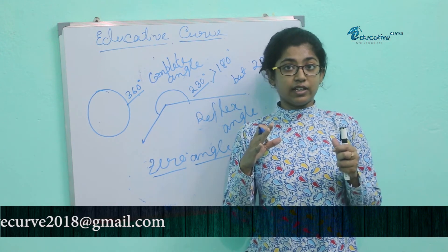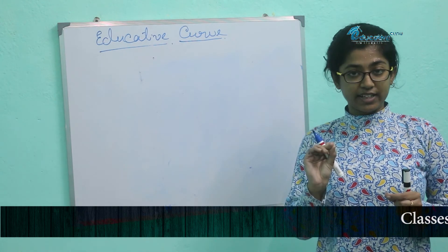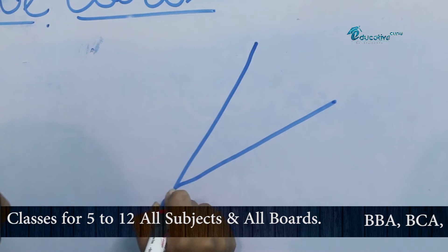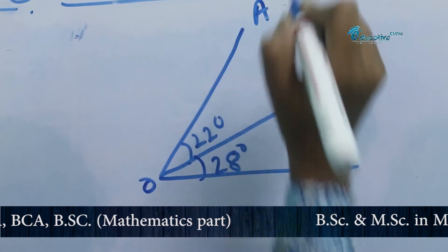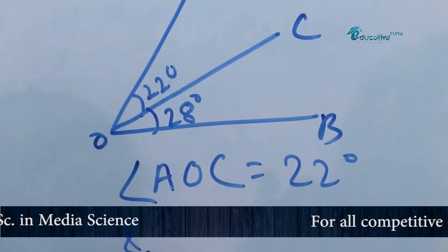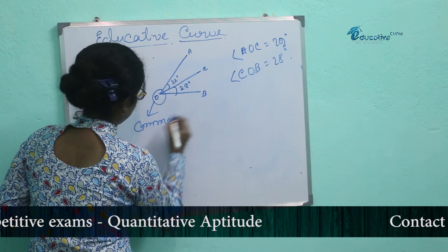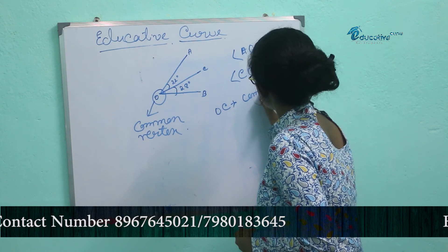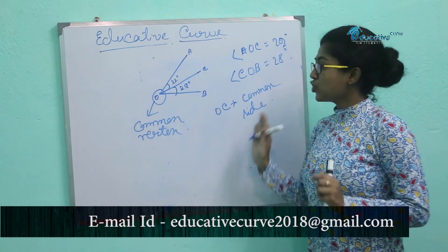Now we will discuss adjacent angles — a very important part of angles. When two angles share a common point, common vertex, or a common side, it is called an adjacent angle. For example, angle AOC is 22 degrees and angle COB is 28 degrees. They have a common vertex which is O, and the common side is OC. According to the picture, they never overlap, so these are called adjacent angles.